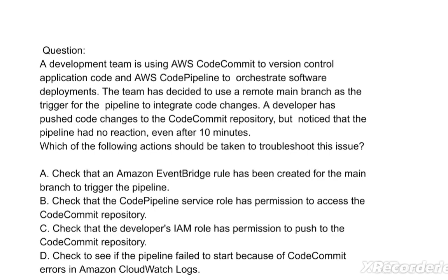A development team is using AWS CodeCommit to version control application code and AWS CodePipeline to orchestrate software deployments. The team has decided to use a remote main branch as the trigger for the pipeline to integrate code changes. A developer has pushed code changes to the commit repository but noticed that the pipeline had no reaction even after 10 minutes.